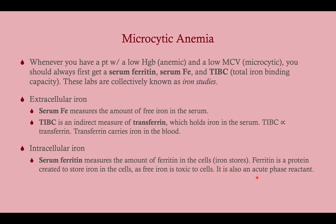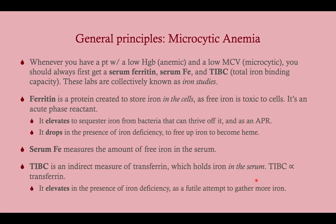Ferritin is also an acute phase reactant, so with inflammation, ferritin goes up. This is going to be really important when we talk about anemia of chronic disease. With inflammation — say from an infection — ferritin sequesters iron in your cells, keeping it away from bacteria. We see elevated ferritin with inflammation from any source: not just infection, but also autoimmune disease. In that case, the anemia of chronic disease is not adaptive, but it still occurs.